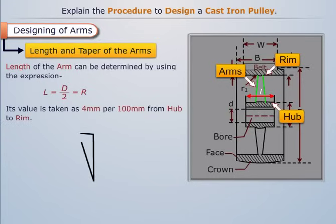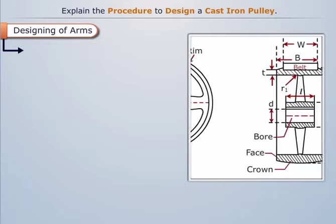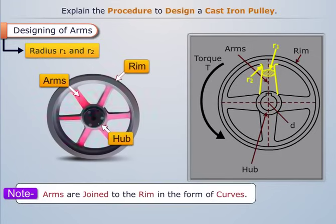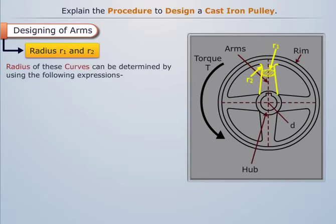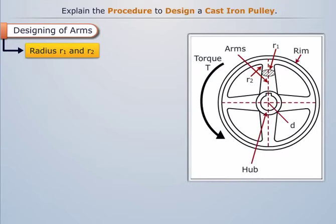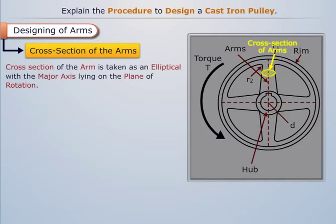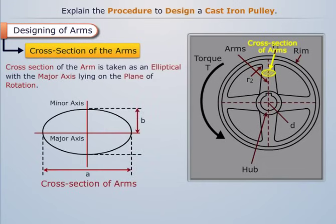The taper value is taken as 4 mm per 100 mm from hub to rim. Arms are joined to the rim in the form of curves; the radii r1 and r2 of these curves can be determined using the relevant expressions. The cross-section of the arm is taken as elliptical, with the major axis lying on the plane of rotation.